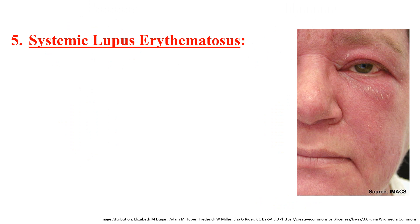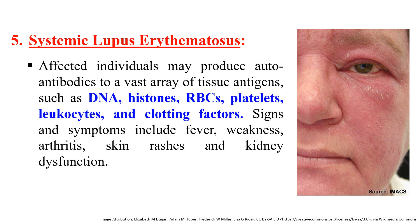The next example is SLE — systemic lupus erythematosus. In this disease, autoantibodies bind to a vast range of antigens including DNA, histones, RBCs, platelets, leukocytes, and clotting factors. When there are many autoantibodies binding to the majority of tissue antigens, certain symptoms develop, collectively called SLE. These symptoms generally include fever, weakness, arthritis, skin rashes, and kidney dysfunction.